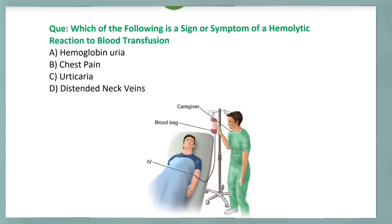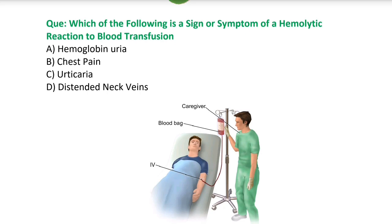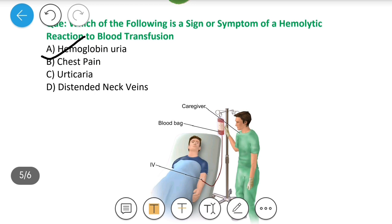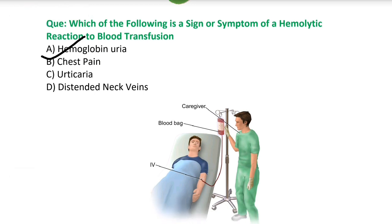Next question: Which of the following is a sign or symptom of a hemolytic reaction to blood transfusion? A) hemoglobinuria, B) chest pain, C) urticaria, D) distended neck vein. Answer is hemoglobinuria. अत्यधिक मात्रा में RBC के destruction की वजह से hemoglobin part urine में देखने को मिलता है. Hemoglobin oxygen-carrying protein होता है जो vital organs को oxygen supply करता है.